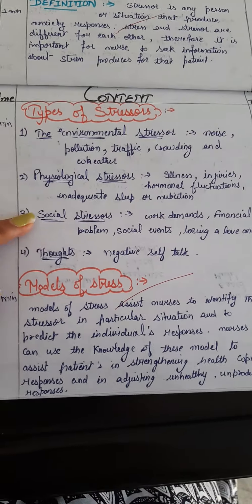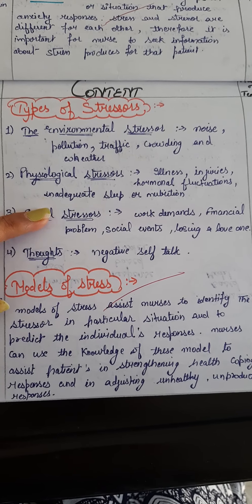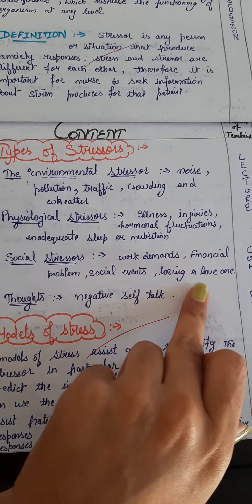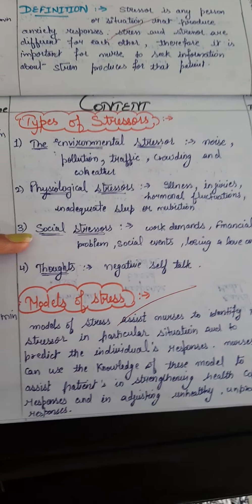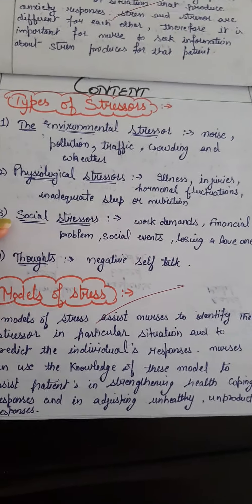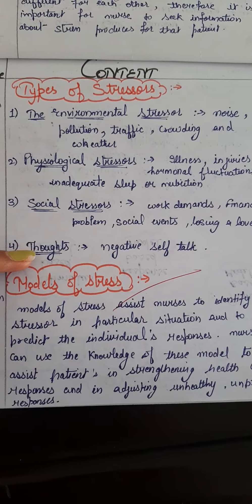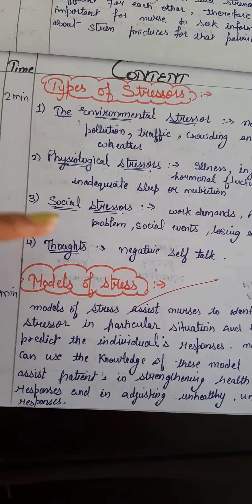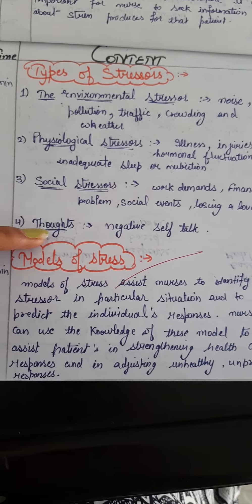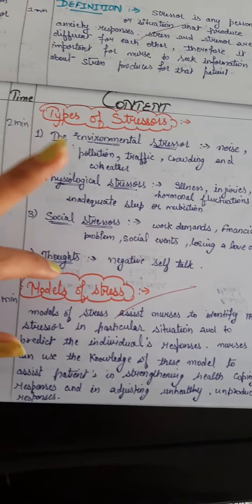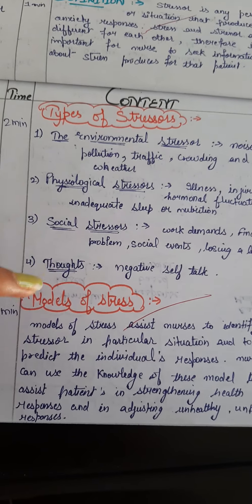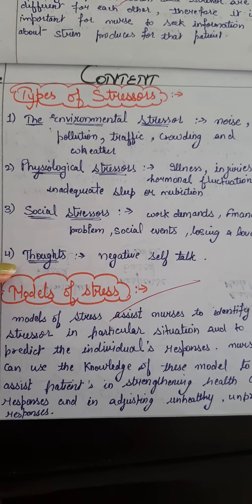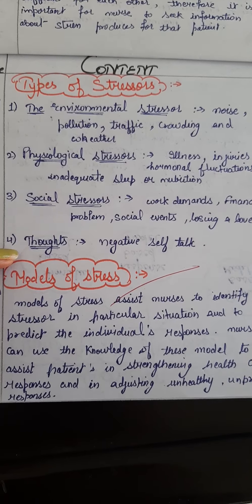Social stressors include financial issues, social events, and loss of loved ones. Then there are thought-based stressors — mainly negative self-thoughts. Thinking negatively can also produce stress to our mind and body.